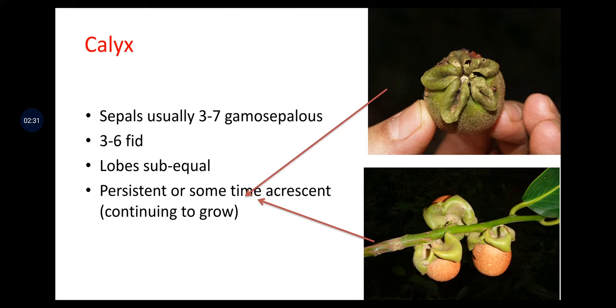Calyx: sepals are usually 3 to 7, gamosepalous, 3 to 6 lobed, lobes sub-equal, persistent or sometimes accrescent, that is, they continue to grow.